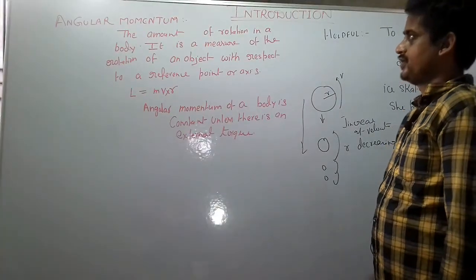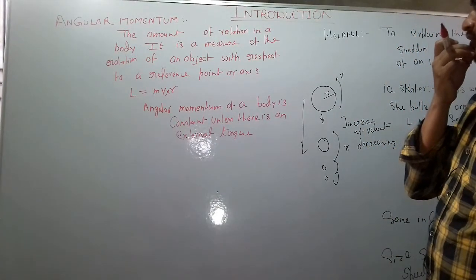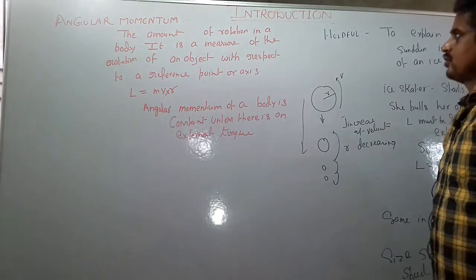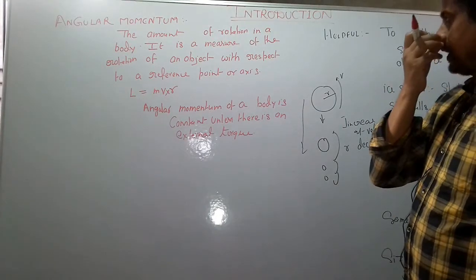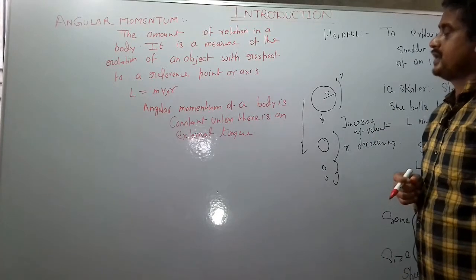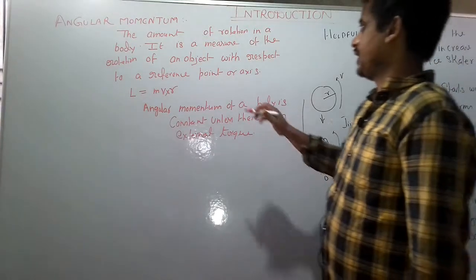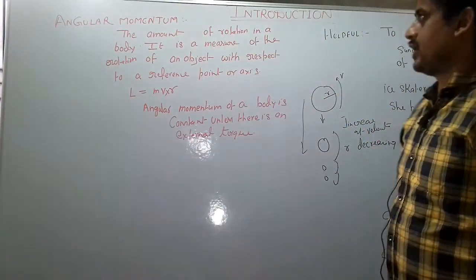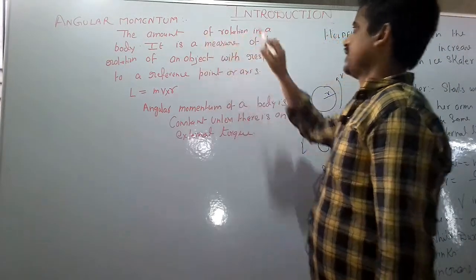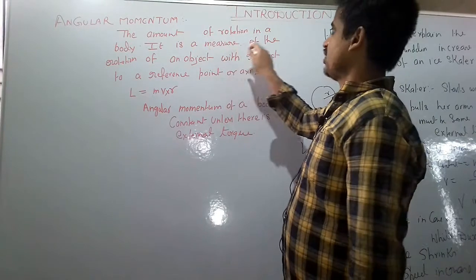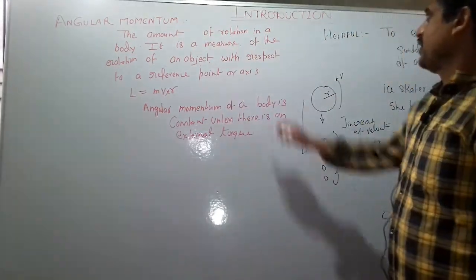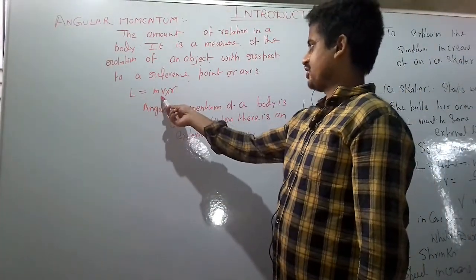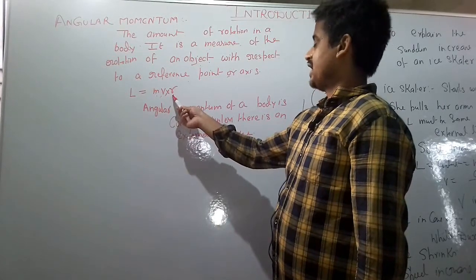Welcome to the R. Ebert Center for Theoretical Physics. This is an introduction to angular momentum, one of the most important concepts in physics. Angular momentum is the amount of rotation in a body — it tells us about the rotation of any physical object with respect to a reference point or an axis. It is the product of three quantities: mass, velocity, and R, which stands for the distance from the rotating axis.